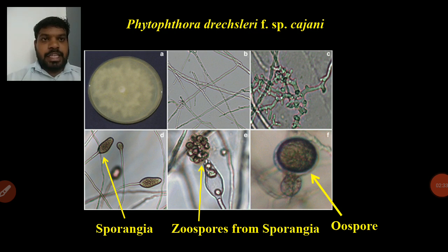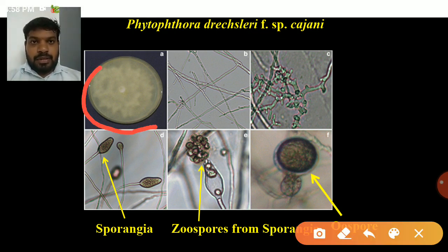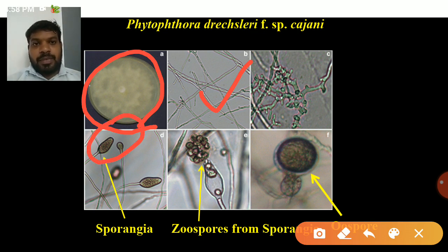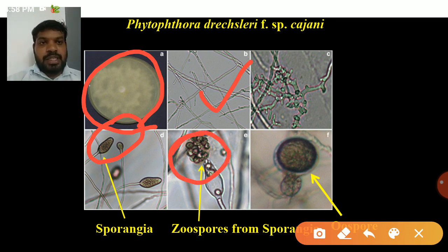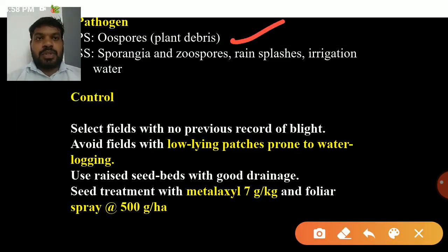Phytophthora drechsleri produces a white color culture on a petri plate. The hyphae are non-septate and colorless. It produces lemon-shaped sporangia, and zoospores are released from the sporangia. Round oospores act as resting spores.